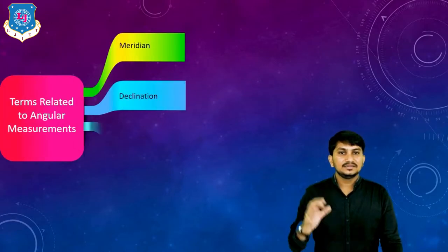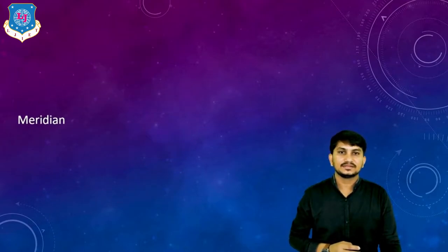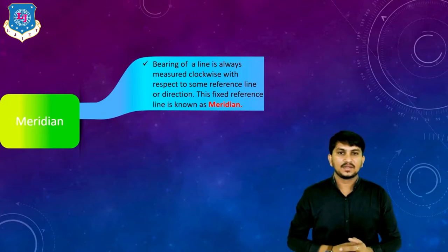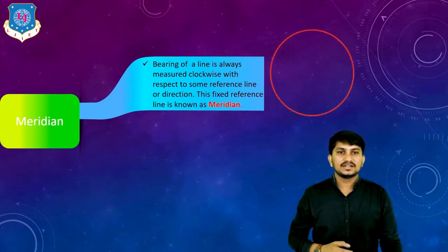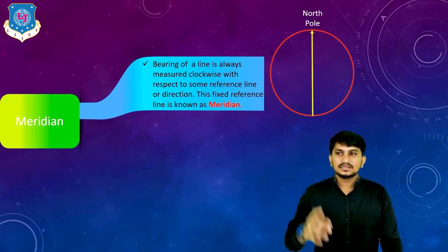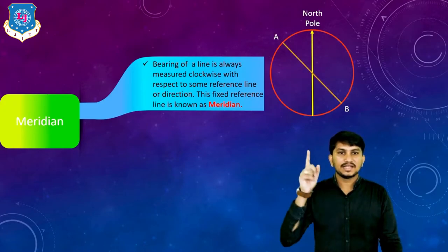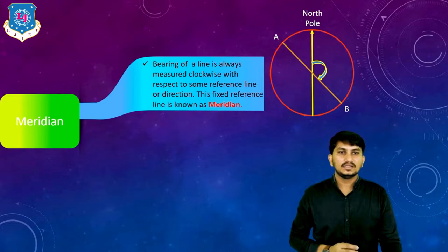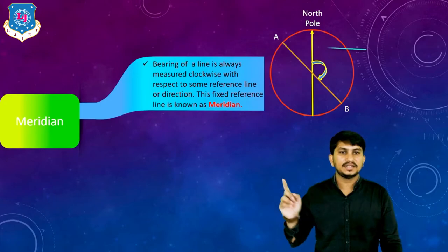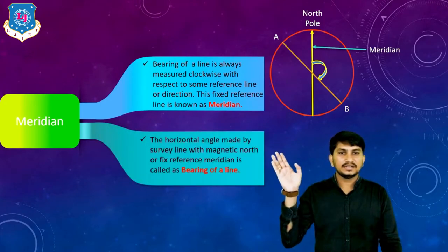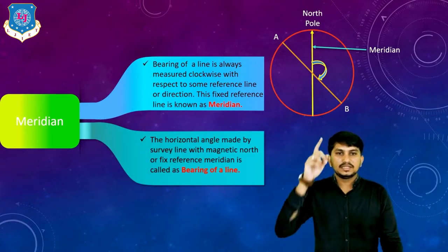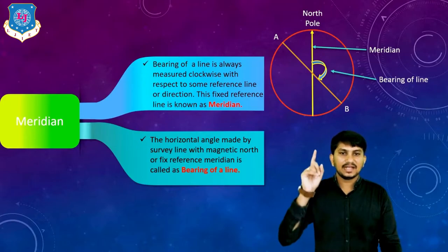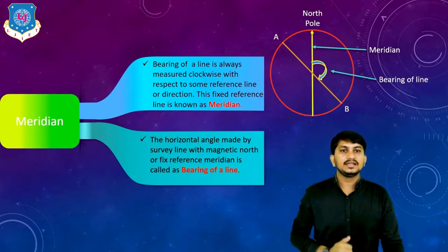Basically, there are four main terms. First is meridian. The bearing of a line is always measured clockwise with respect to some reference direction. This fixed reference direction is known as meridian. Suppose there is the earth, there is the North Pole, there is one line. If we measure the angle or bearing of the line with respect to the North Pole, this fixed North Pole direction or reference direction is called as meridian. The horizontal angle made by a survey line with the magnetic North or fixed reference meridian is called as the bearing of the line.